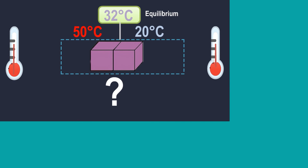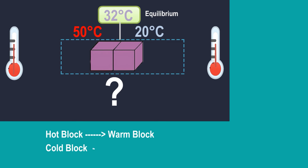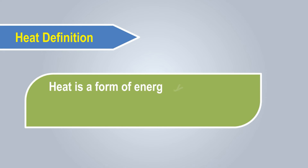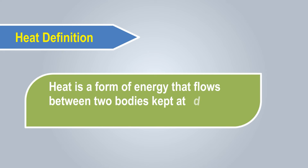So what do we understand from this example? The hot block changed into a warm block and the cold block also changed into a warm block. The hot block leaves energy to the cold block, becoming a warm block. So basically, energy is transferred which results in a change in temperature of the body. Heat definition: heat is a form of energy that flows between two bodies kept at different temperatures.